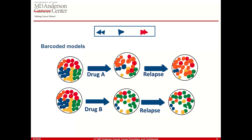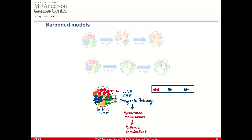Imagine a scenario where you could run the same tumor across different drugs and understand how each tumor population responds. And not just that — imagine you could go back in time and isolate specific lineages and understand their somatic variations, copy number variation, perform transcriptional analysis to understand the oncogenic pathway, and further elucidate resistant mechanisms and possible rational therapies.